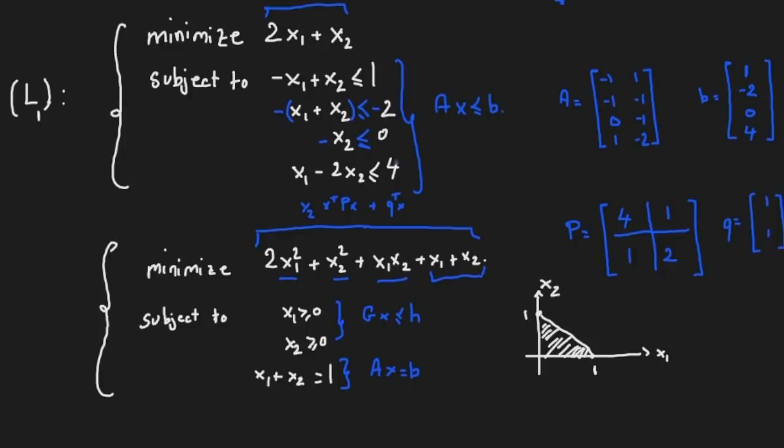Then your G would turn out to be: the first row contains the first inequality constraint so -1, 0, and 0, -1 for the second inequality constraint. Now your h is everything on the right hand side, so it's all zeros.